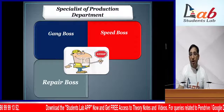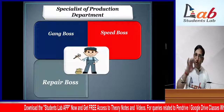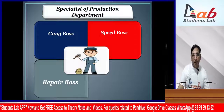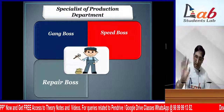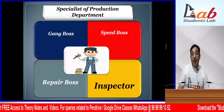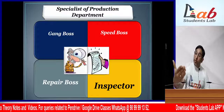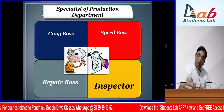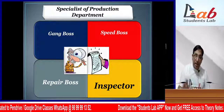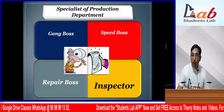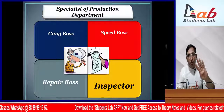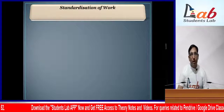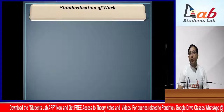Then comes the Repair Boss. Those were our 4 foremen - specialist foremen of the Production Department. So 4 foremen for Planning and 4 foremen for Production - that is Execution. This concept was named Functional Foremanship.